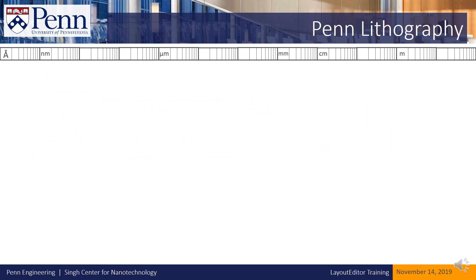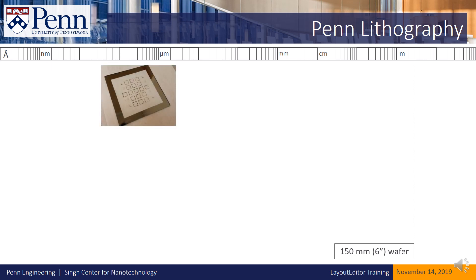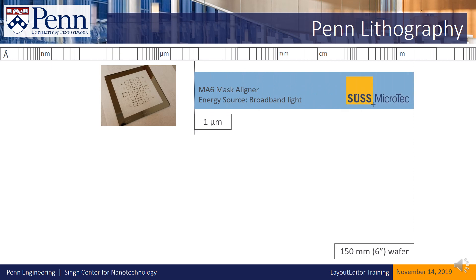First, we'd like to give you an idea of what you can do in QNF lithography. The lithography tools in the QNF can handle a variety of substrate sizes — any size up to 6-inch wafers, which includes 4-inch wafers and pieces. If you'd like to pattern features down to about a micron in minimum feature size, you should consider using the Seuss MA6 mask aligner. Exposures on this tool are usually fast, taking only a few seconds, but they are limited in minimum feature size compared to other tools.